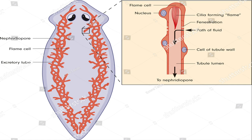Let us move towards excretion in planaria — how planaria excretes metabolic waste or excess water from its body. Planaria has a tube-like structure on both sides of its body. This tube-like structure helps in the excretion of metabolic waste or water. These tubes are mainly called protonephridia, and this protonephridial system of excretion is mainly associated with flatworms — organisms included in phylum Platyhelminthes.